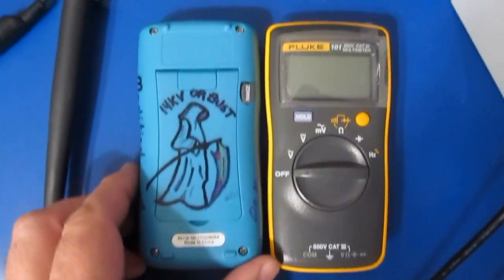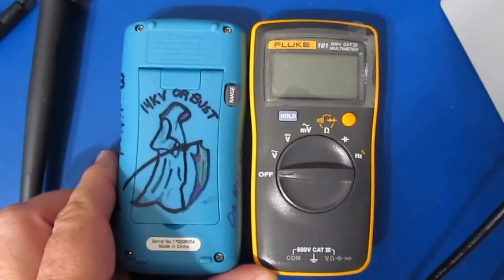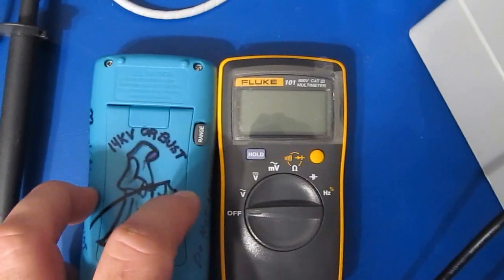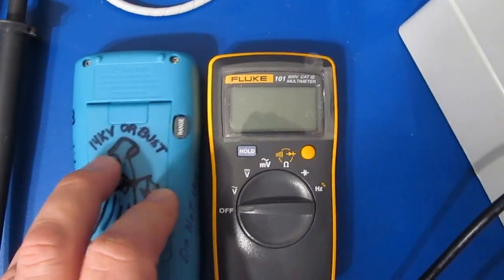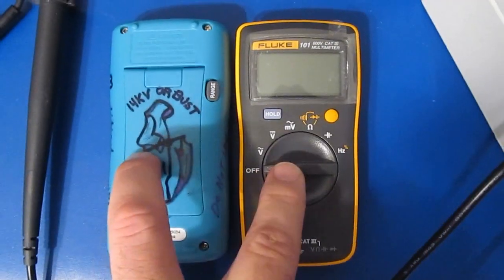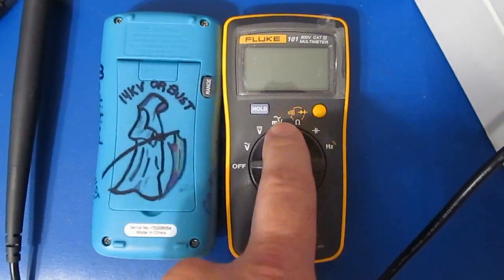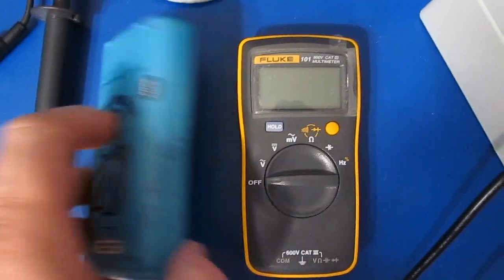Alright, so our modified Kasuntest ZT102 survived all those tests. So that was 14,000 volts at a 50 microsecond full width half height. That is right on par with what I've tested the Fluke 101 at. Pretty good, but I think we can do better.